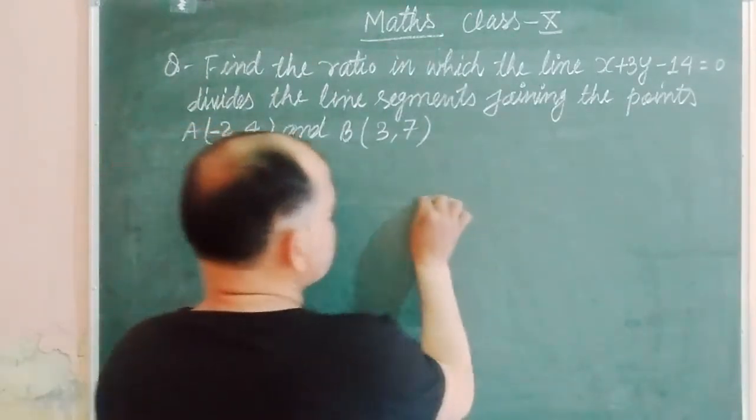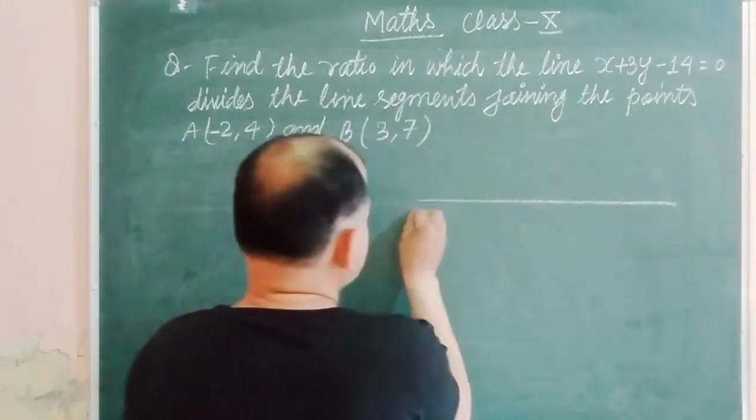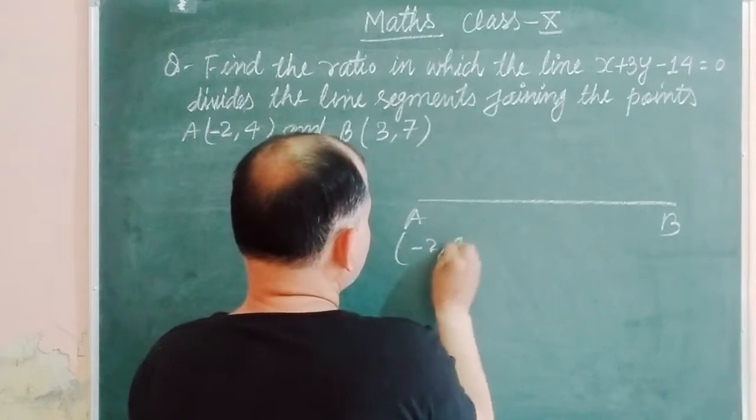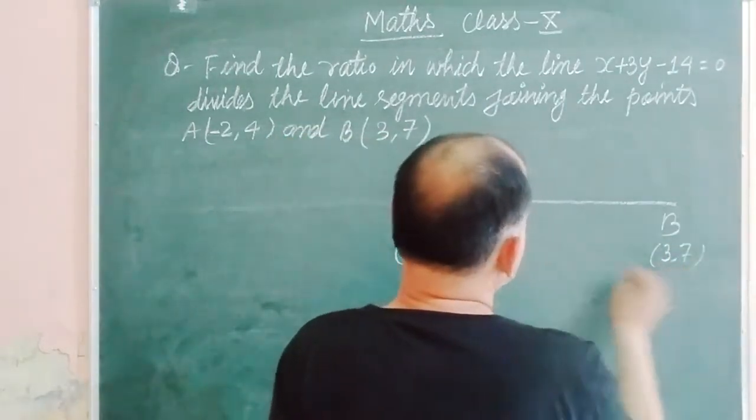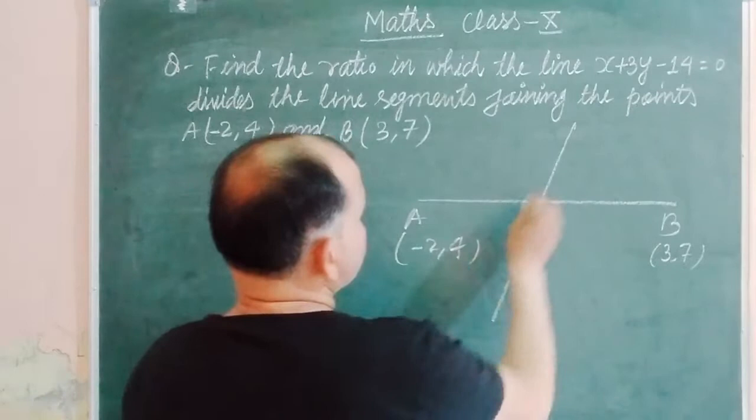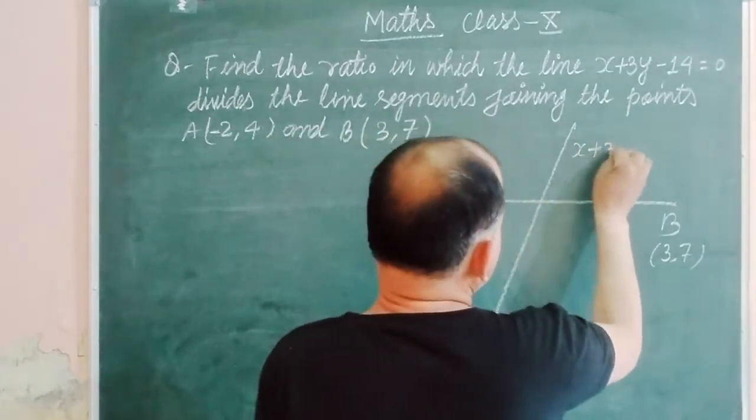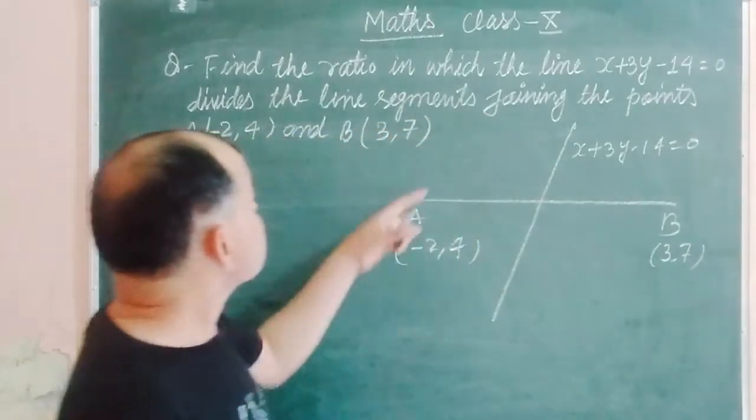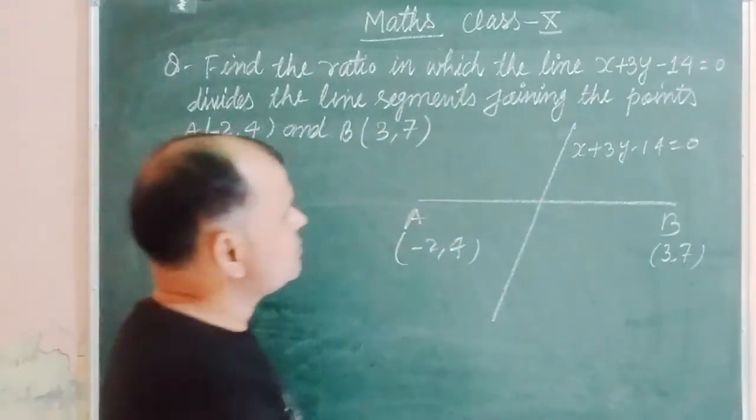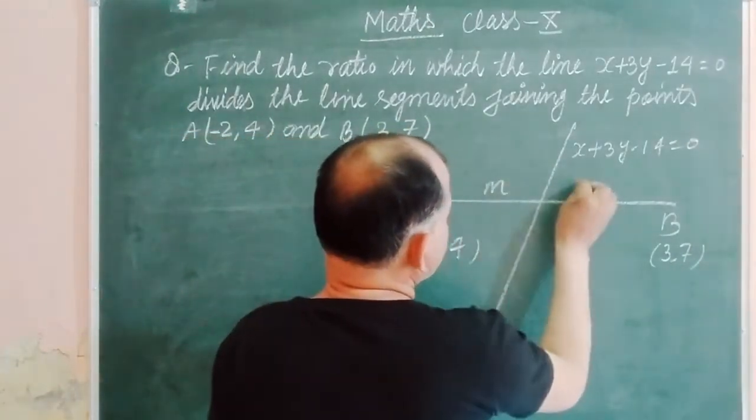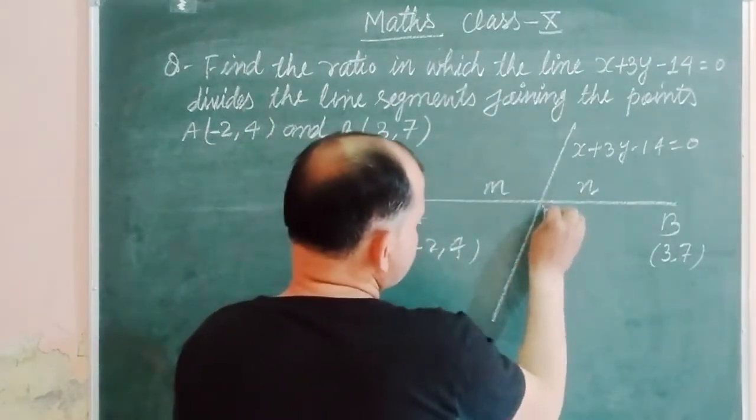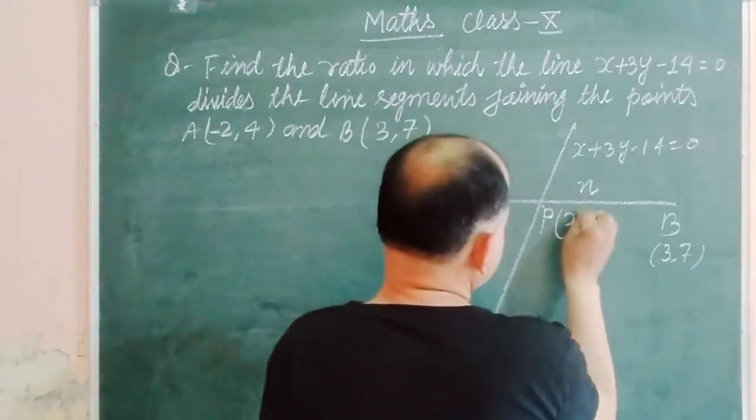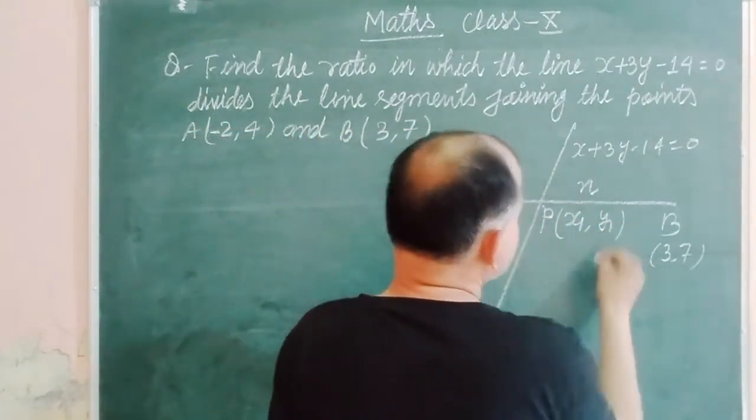So students, first we draw our line segment which is AB and its coordinates are (-2, 4) and (3, 7). And a line, this is a straight line, this is x plus 3y minus 14 equal to 0, divides this line segment into m ratio n. And the point P, which is the dividing point, has coordinates (x1, y1).